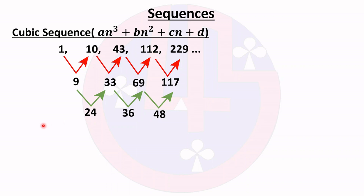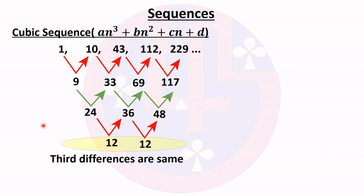Then we find the third differences. 36 minus 24 gives 12, and 48 minus 36 also gives 12. The third differences are the same, which confirms this is a cubic sequence.